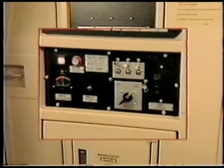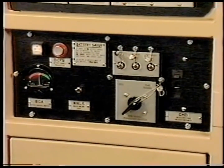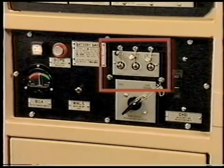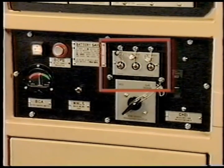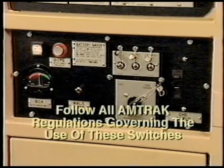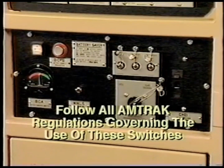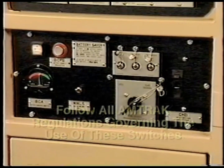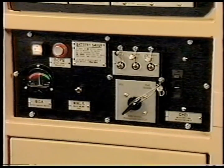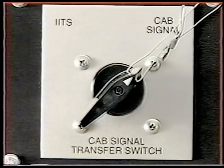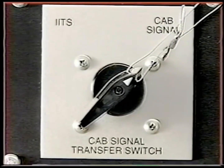The alerter, cab signal system, and overspeed may be cut out if the associated equipment is not functioning properly. However, you must follow all Amtrak regulations governing the use of these switches. The cab signal transfer switch selects between the cab signal system and the intermittent inductive train stop system.